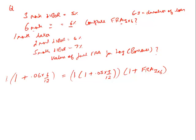These two paths must be equal, otherwise there is an arbitrage opportunity. Please note: rates are always annualized, so whatever annualized rate applies must be multiplied by 3/12 to get the interest for 3 months. Using this equation we can solve for the fair contracted rate on the 3×6 FRA.